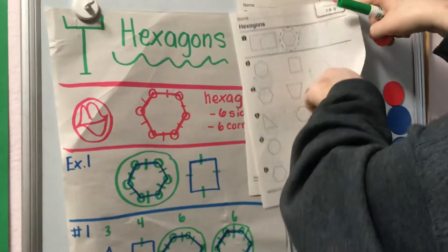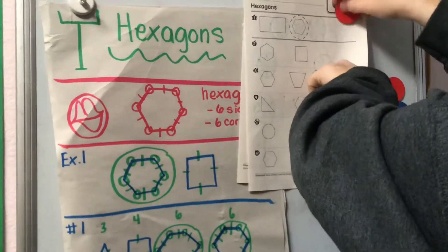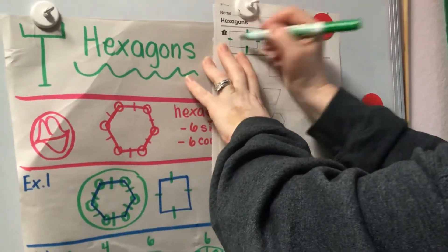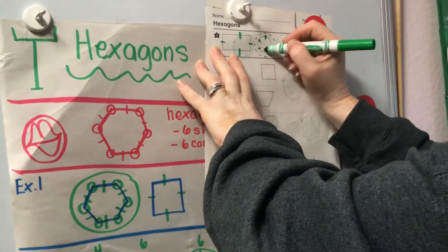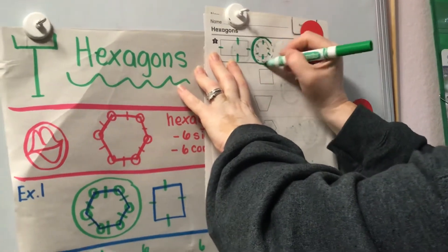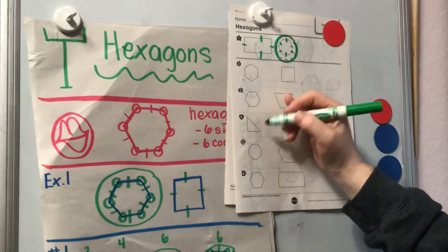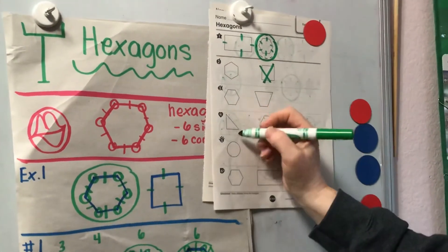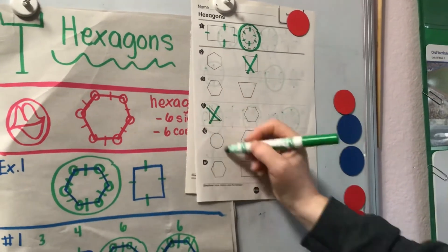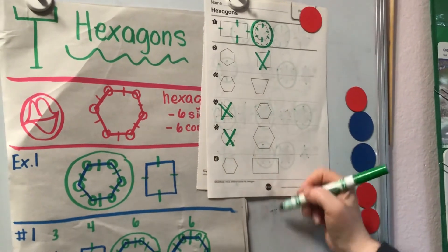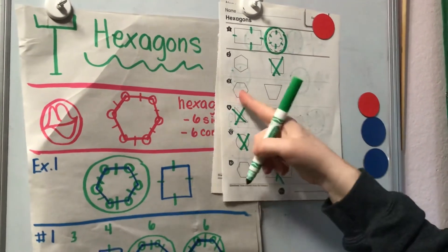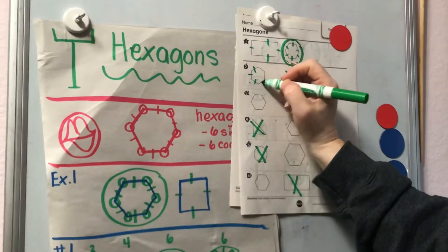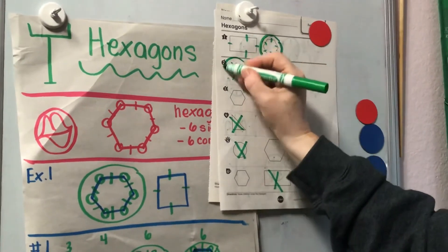Now when we look on the back, this is the easier page. This is showing us that a rectangle has four sides, and our hexagon has six. So we're going to look at the shapes. I already know square — no. I already know triangle — no. I already know circle — no. I already know square — I'm not sure, so I'm going to go back and count: one, two, three, four, five, six — hexagon.